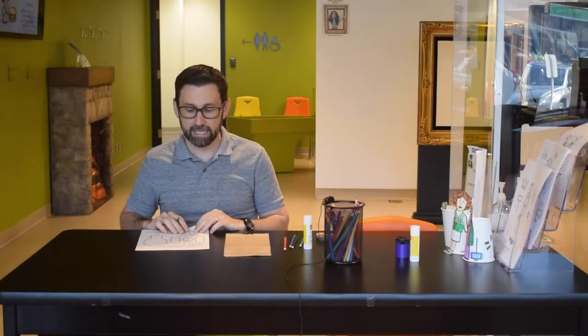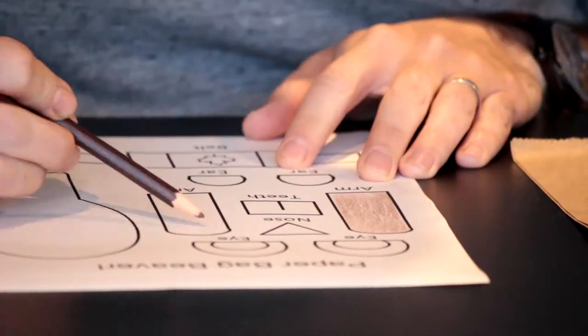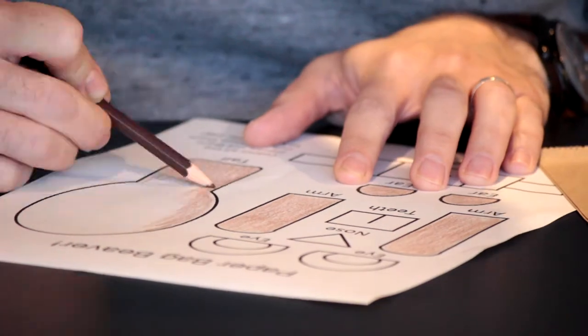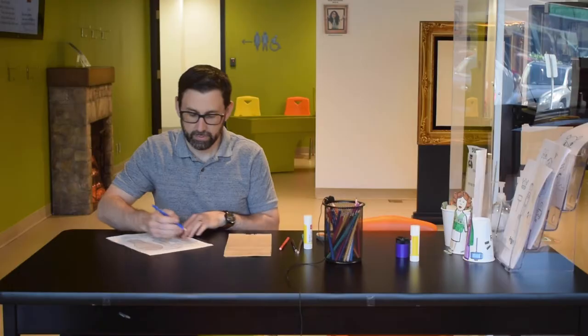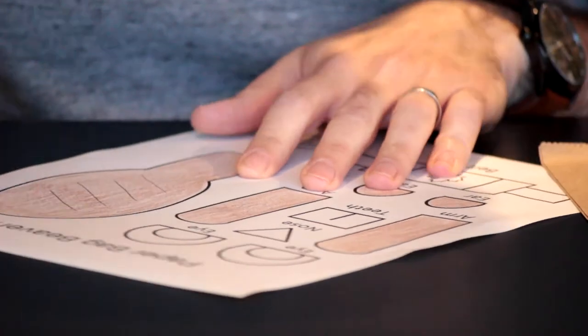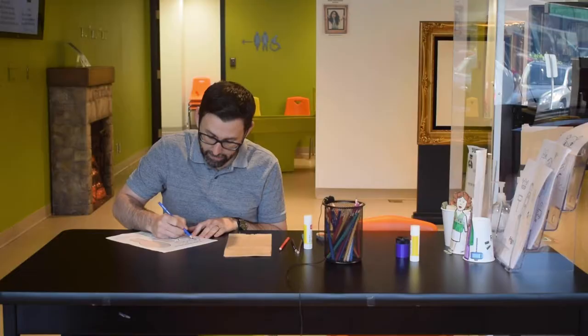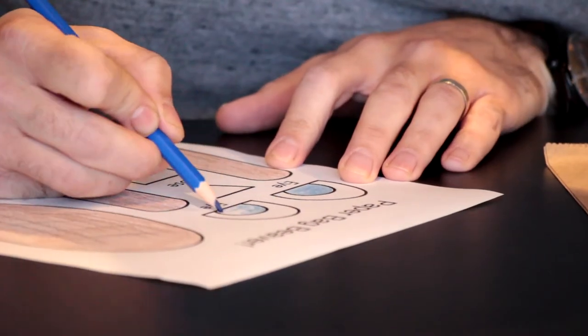The first thing we'd like to do is color in our beaver. We're going to color in all the different elements that will come together to make our paper bag beaver. You can color the beaver anything you'd like. I'm going to make my beaver have nice blue eyes.